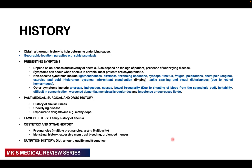Most patients with anemia are often asymptomatic and it is discovered incidentally. Non-specific symptoms include lightheadedness, dizziness, throbbing headache, syncope, tinnitus, fatigue, palpitations, chest pain or angina, exercise and cold intolerance, difficulty breathing, intermittent claudication — pain in the calf muscles when walking due to hypoxia — ankle swelling, visual disturbances from retinal hemorrhage, anorexia, indigestion, nausea, bowel irregularity due to blood shunting from the splanchnic bed, irritability, difficulty concentrating, worsening dementia, menstrual irregularities, impotence, and decreased libido.